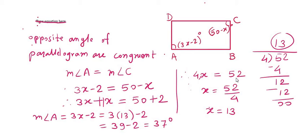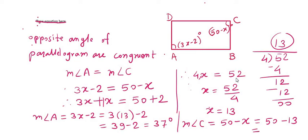Now we find angle C. Measure of angle C is 50 minus X, that means 50 minus 13, which equals 37 degrees. As expected, opposite angles are equal — both angle A and angle C are 37 degrees.